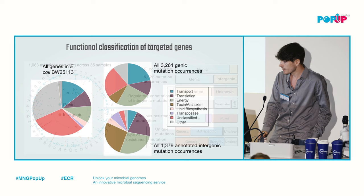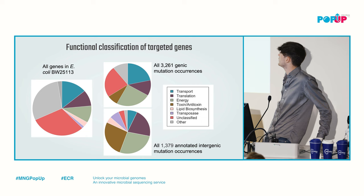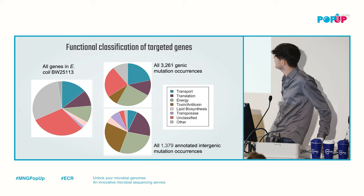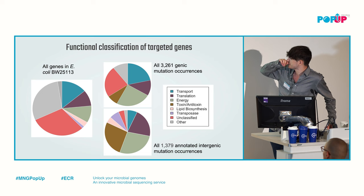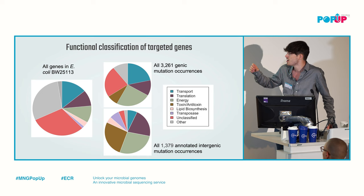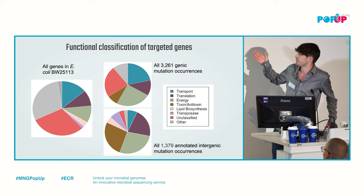Functional classification of targeted genes shows three main categories: membrane transport, translation, and energy production or cellular respiration. These are prevalent in both genic and intergenic mutations. However, there are key differences — toxin-antitoxin gene mutations are far more common in regulatory regions than within the gene itself. Two functional categories — lipid biosynthesis and transposases — appear only in regulatory mutations with no associated genic mutations.